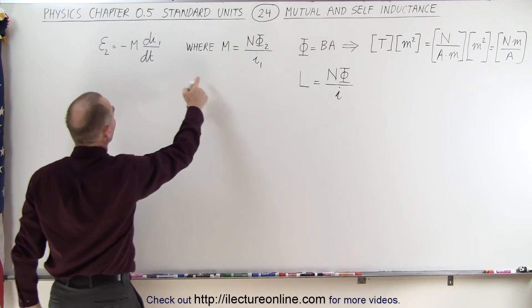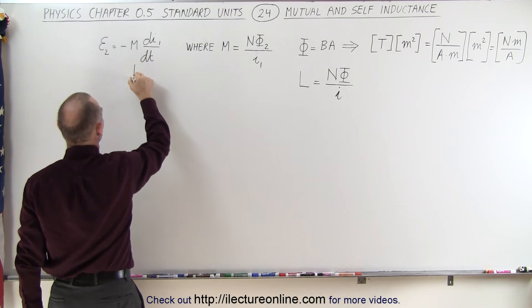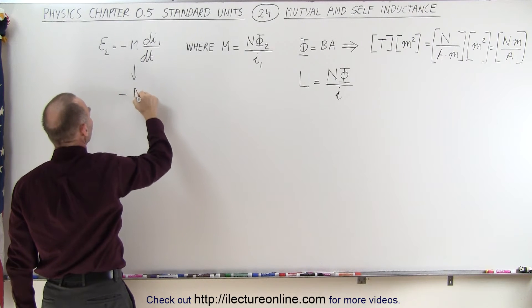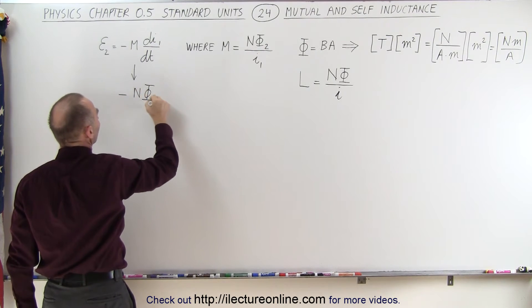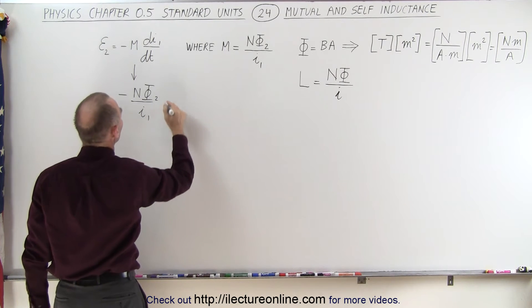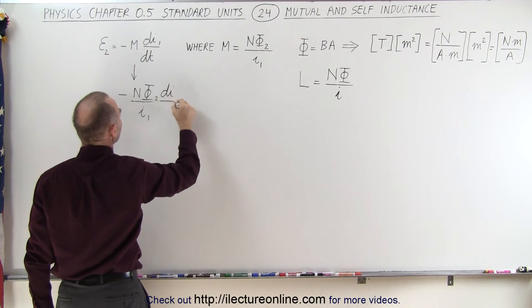Of course, if we're going to talk about units, let's plug in the equation that makes it easier. So minus N times the flux divided by the current. Of course, that's two and one. It doesn't really matter, the subscripts. Then we have dI/dt.